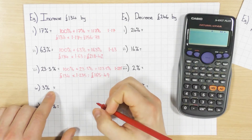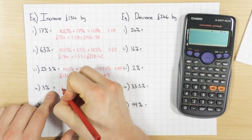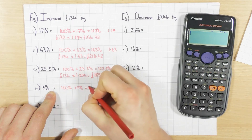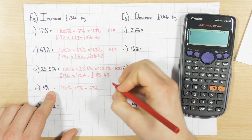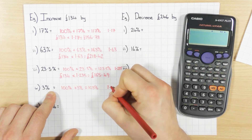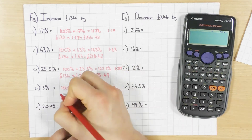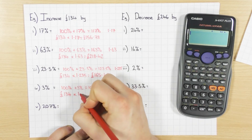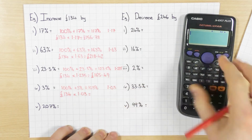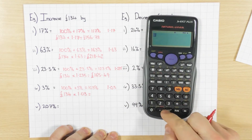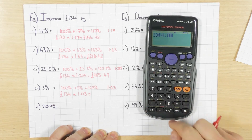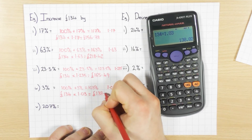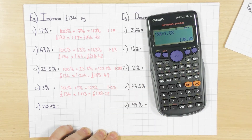Next one: increasing by 3%. So 100% plus 3% is obviously 103%. Divide by 100 to get the decimal multiplier: 1.03. By all means you might have jumped ahead and done some of these yourself — that's absolutely fine, I'm just going through it step by step so everyone can see. And that gives £138.02.